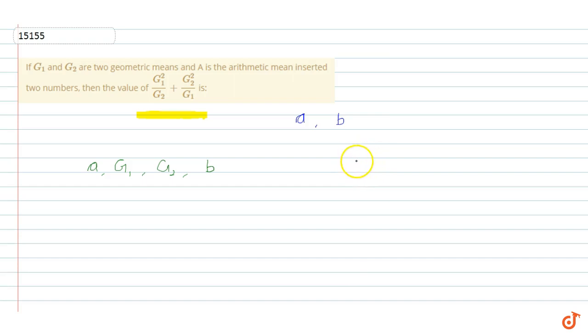We are also given the arithmetic mean of these two terms, which is capital A. So a plus b by 2 is equal to capital A. Simply, if we see, this is a geometric sequence.